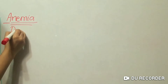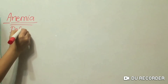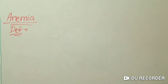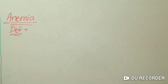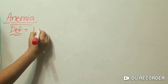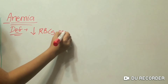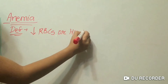What is anemia? Its definition: anemia is a condition in which you don't have enough healthy red blood cells to carry adequate oxygen to the body tissues. In another way, it means a decrease or insufficiency of RBCs or hemoglobin in blood.